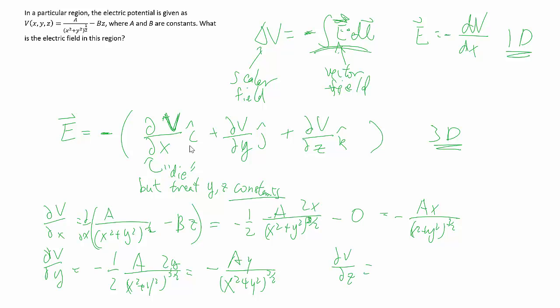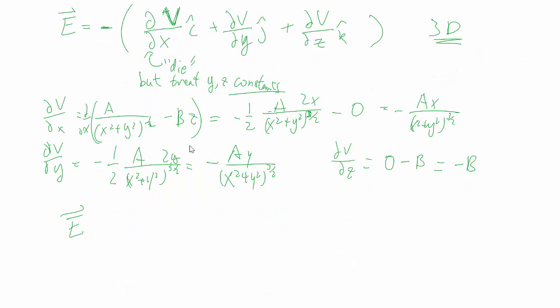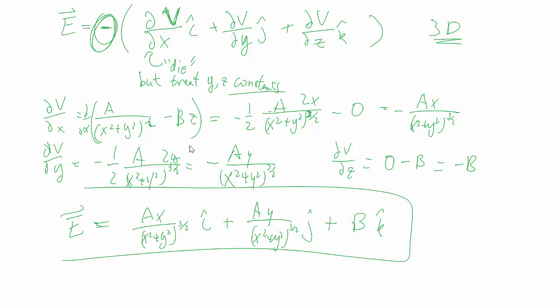And then we'll just squeeze in del V/del z here, because it's really simple. x and y, a and b are all constants, so that first term is nothing and we end up with b, so minus b. Putting it together then, don't forget this negative sign out front, so I'll flip all this stuff and we'll add in the i-hat as well, j-hat, and then finally the k-hat. This shows you how we use this to relate potential and electric field in a 3D case.